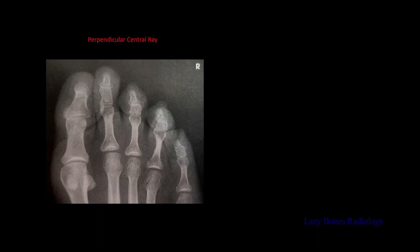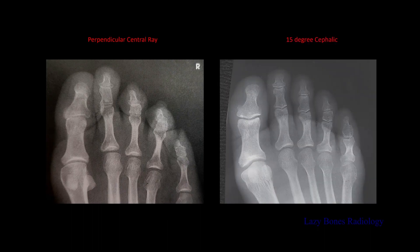Now let's look at the perpendicular and axial projections. This is the perpendicular centering, while this is the 15-degree cephalic angulation. Do you see the difference between them? As you can see here on the perpendicular centering, you are unable to see the joint spaces correctly. While on the 15-degree, you're able to clearly see the DIP, PIP, and interphalangeal joints. When I was in x-ray school, I was always taught the 15-degree cephalic angulation for all my toes, because you're able to visualize in better detail the anatomy of the toes. But the perpendicular centering can be used if you want to have visualization of the toes, for example, in a trauma situation.